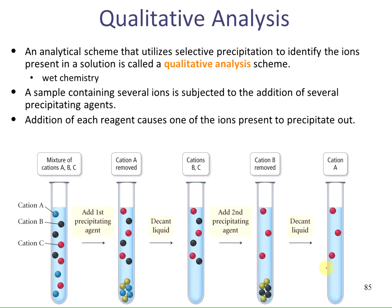During the qualitative analysis, you'll be given a sample containing several ions, and it's subjected to the addition of several precipitating agents. Each reagent causes one of the ions to precipitate out. As a representative example, in this first test tube we've got three different cations A, B, and C. You add a precipitating agent which causes only one ion to precipitate—here, A was precipitated—leaving everything else in solution. You can pour off the liquid containing ions B and C, leaving solid A behind. A new reagent is then added to precipitate the next ion, B, leaving C in solution. This is how you separate all the different ions.